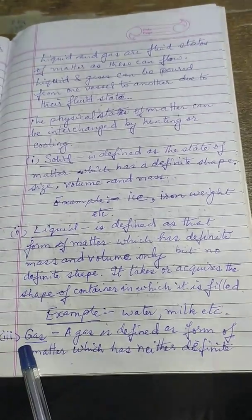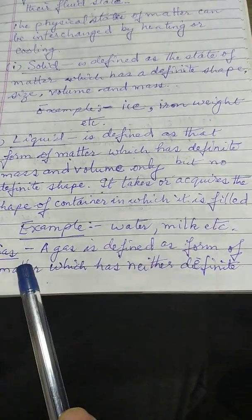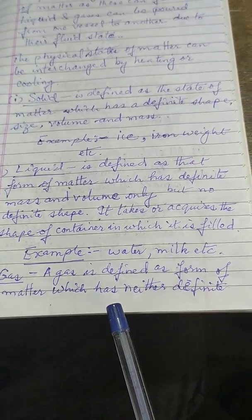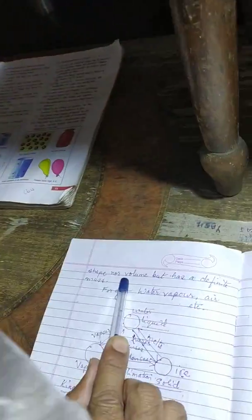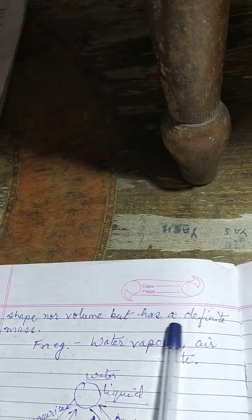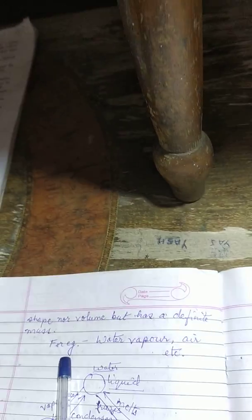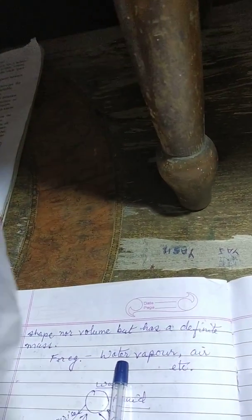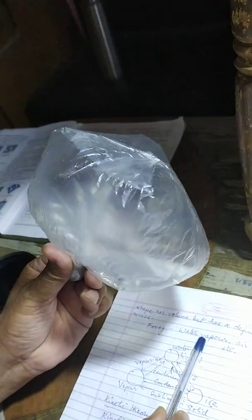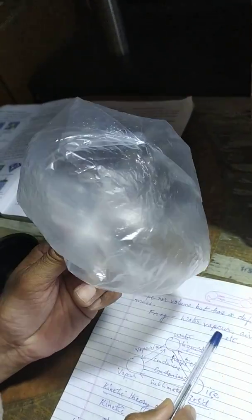The third state of matter is gas. A gas is defined as a form of matter which has neither definite shape nor volume, but has a definite mass. For example, water vapor or air, which we can see in this balloon-like polythene bag.